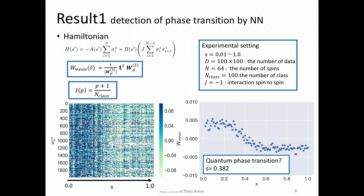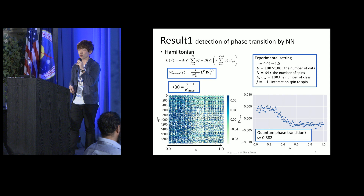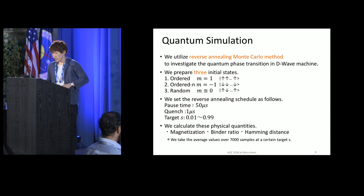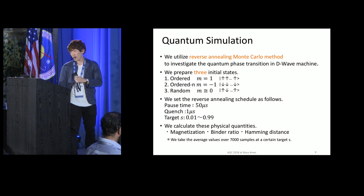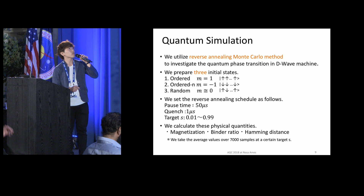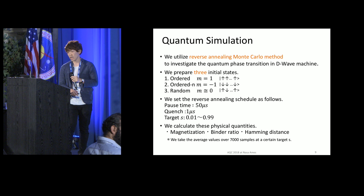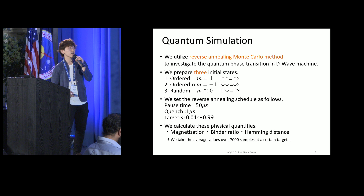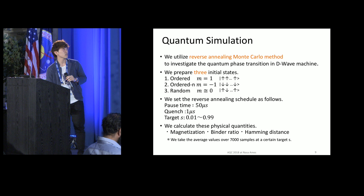In order to more precisely investigate this quantum phase transition, we perform quantum simulation using the machine. We utilize the reverse annealing Monte Carlo method. We prepare three initial classical states: the first is the ordered state with magnetization equal 1 (all spins up), the second is the ordered negative state (all spins down), and the last is random with magnetization close to zero. We set the reverse annealing schedule and calculate physical quantities such as magnetization and the Binder ratio, and the Hamming distance from the initial classical states. We take an average of 7,000 samples at a certain target S.